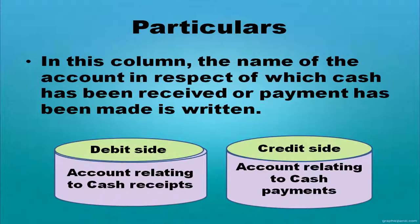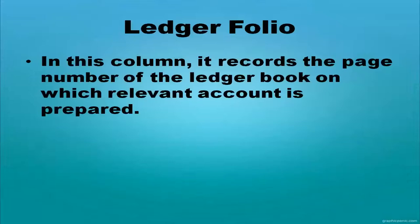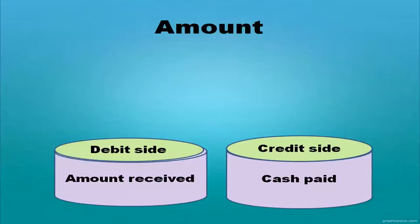Receipt accounts go on the debit side; payment accounts go on the credit side. The ledger folio column records the page number of the ledger book on which the relevant account is prepared. In the amount column, amount received is written on the debit side, and cash paid is written on the credit side.